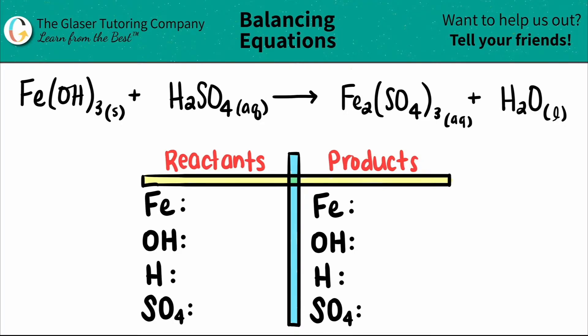Today, we're going to be balancing the equation of iron three hydroxide Fe(OH)3 plus sulfuric acid, which is H2SO4, and that will produce or yield Fe2(SO4)3 and then plus water.